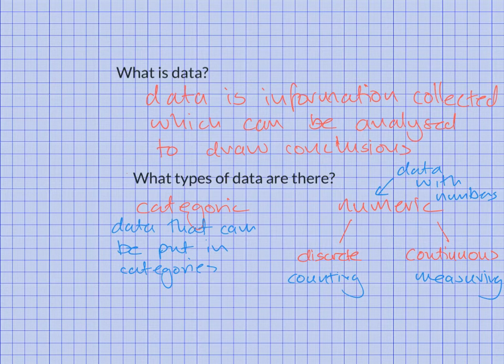Categoric is data that can be put into categories. Numeric is data with numbers. Discrete data is a type of numeric data where you count individual things. Continuous data is data where you have measured something.